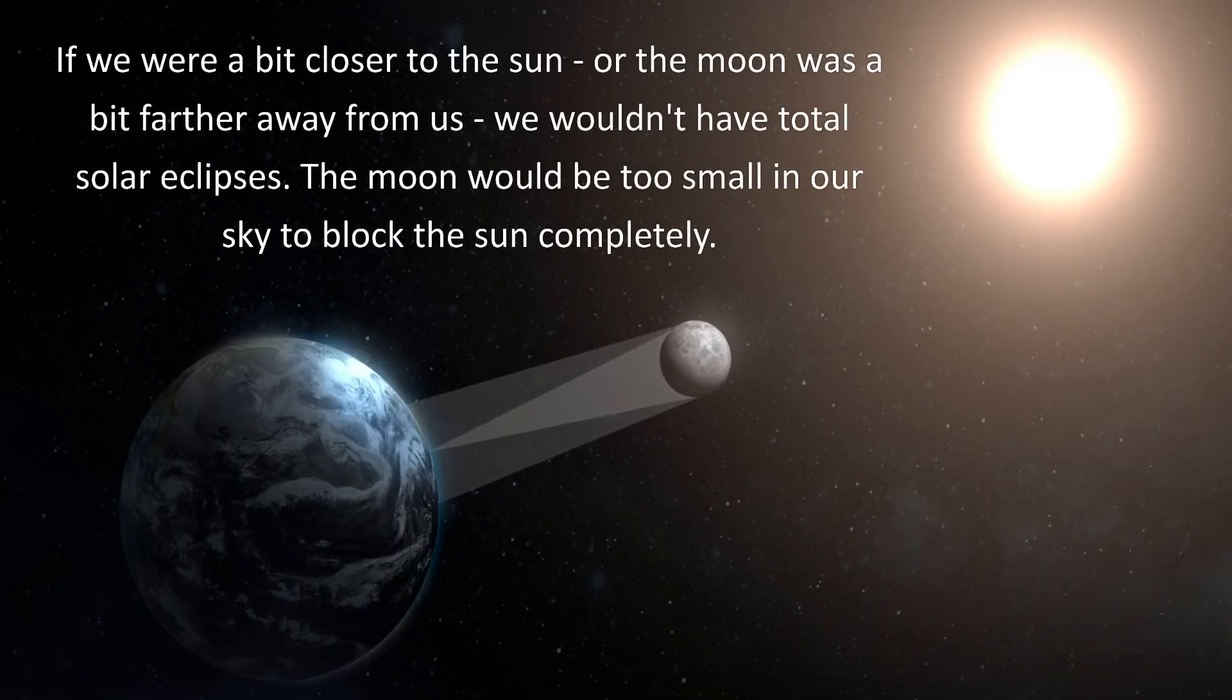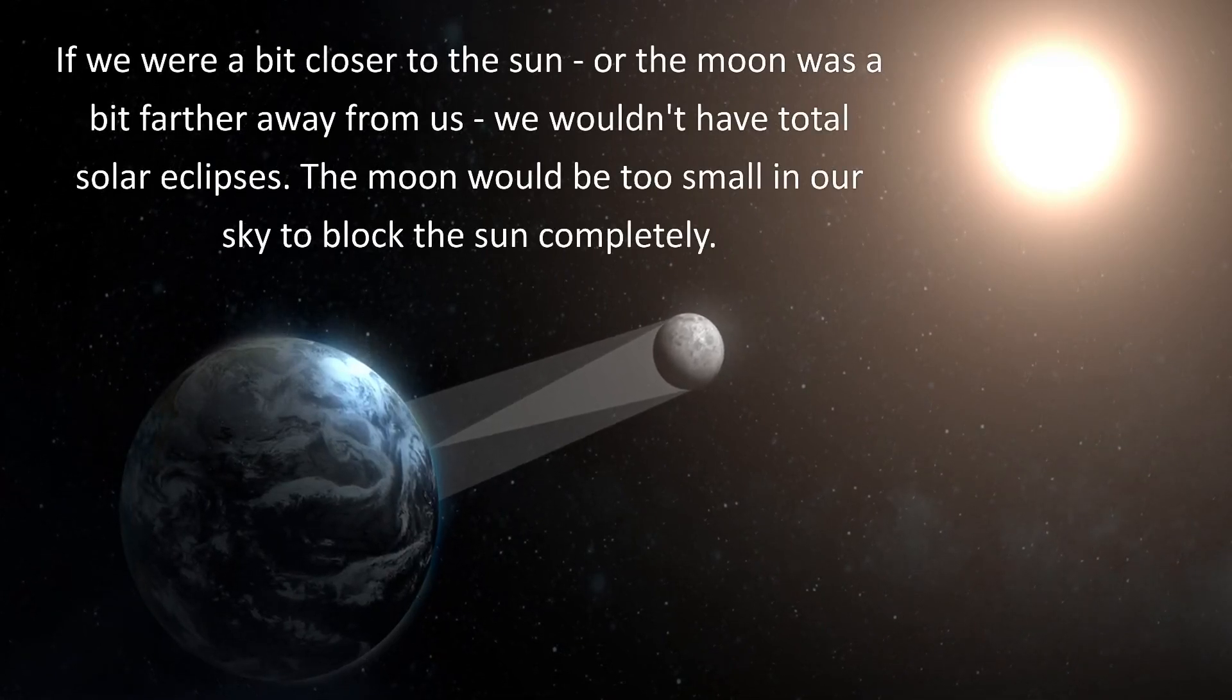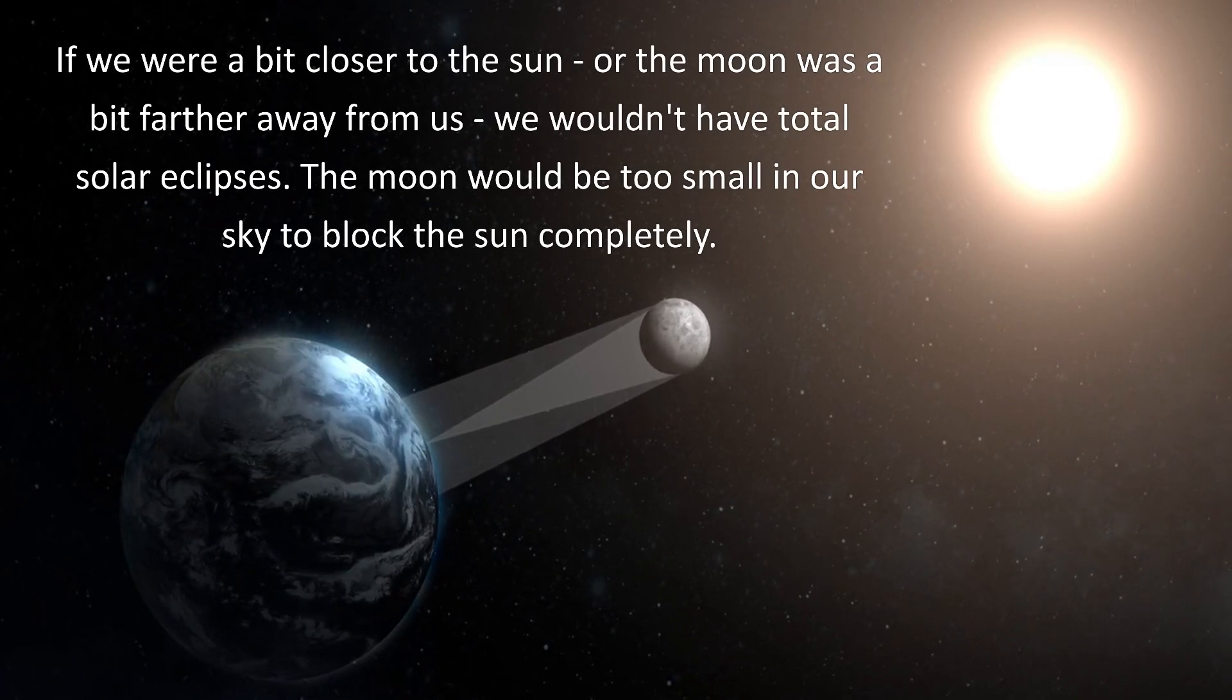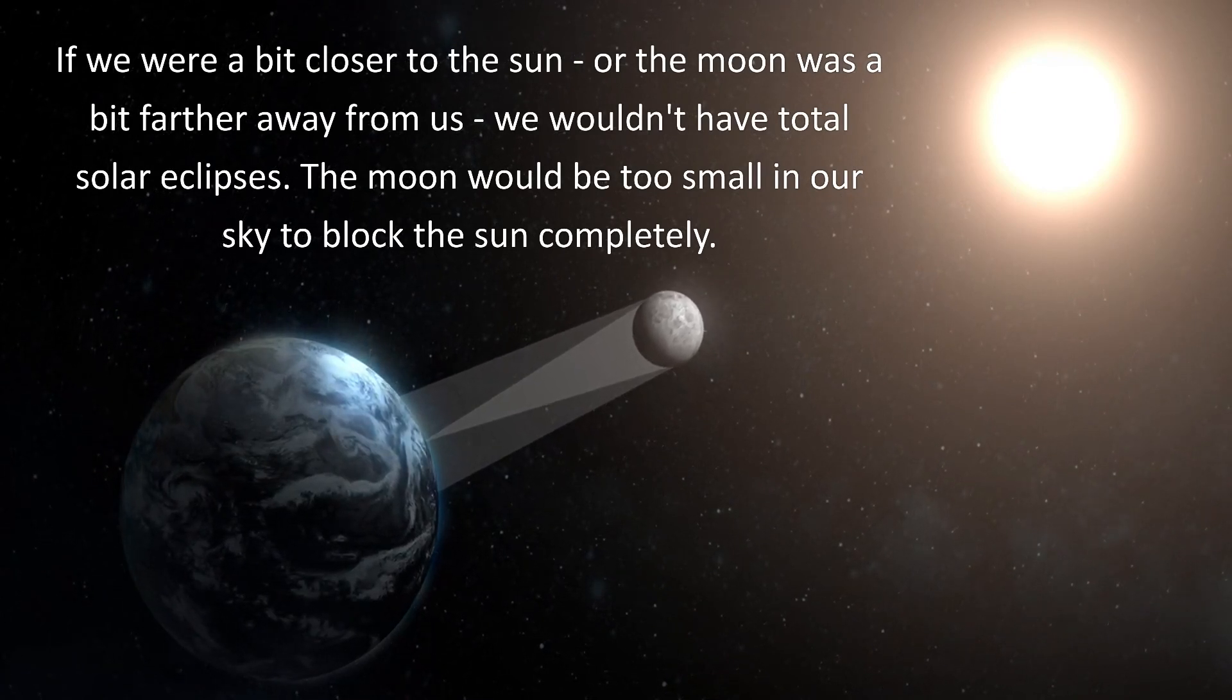If we were a bit closer to the sun, or the moon was a bit farther away from us, we wouldn't have total solar eclipses. The moon would be too small in our sky to block the sun completely.